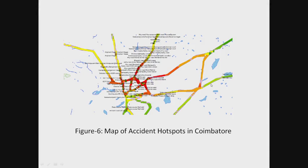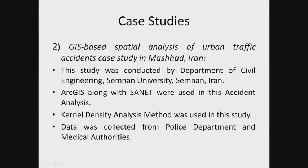The second case study was a GIS-based spatial analysis of urban traffic accidents conducted in Mashhad, Iran. This study was conducted by the Department of Civil Engineering, Semnan University, Semnan, Iran, due to the large number of accidents in the city of Mashhad. ArcGIS along with Sanit, a Japanese GIS-based software, were used. A kernel density analysis method was applied, with data collected from the police department and medical authorities.